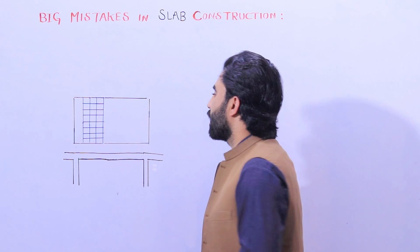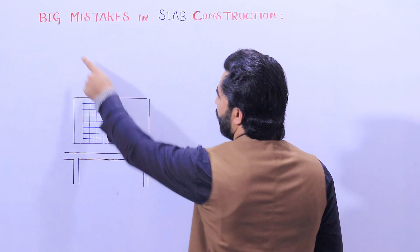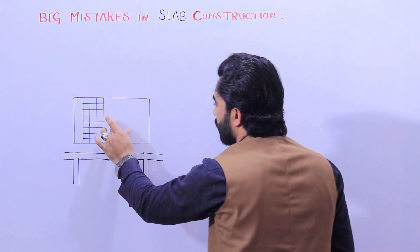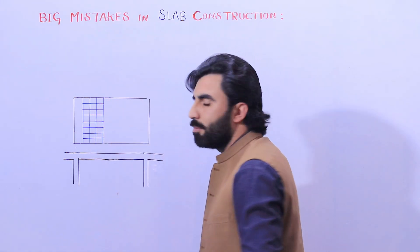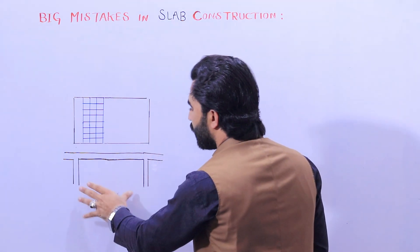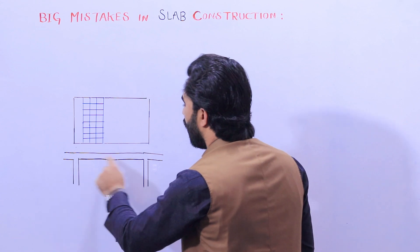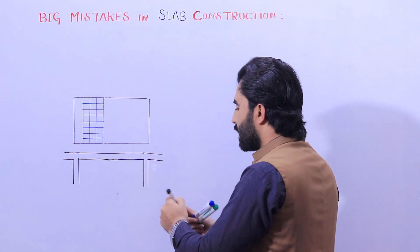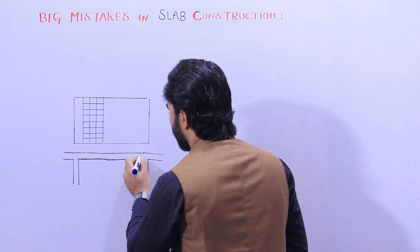Now let me guide you in this section. You can see this is the plan of the slab — the topic is big mistakes in slab construction. You can see main bars and distribution bars in the plan. This is the section of the slab, with the two supports on top. Inside you can see the steel reinforcement.